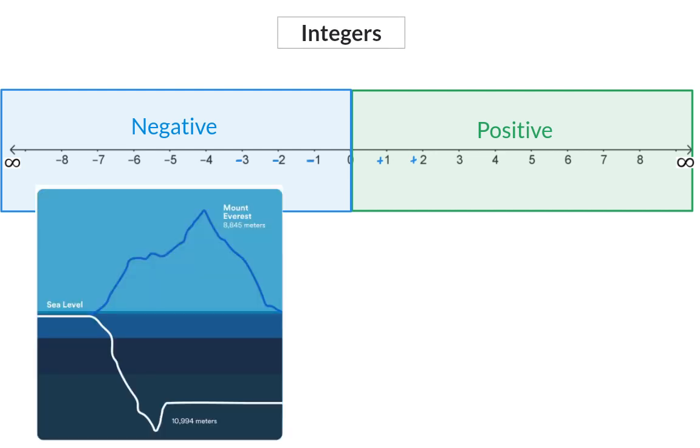An example of where integers will be used is when we measure sea level. An area that lies exactly on sea level will have a zero height above sea level, where an area that is higher than sea level will have a positive height above sea level, and one that is lower than sea level will have a negative height above sea level.